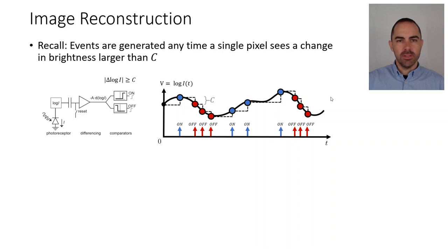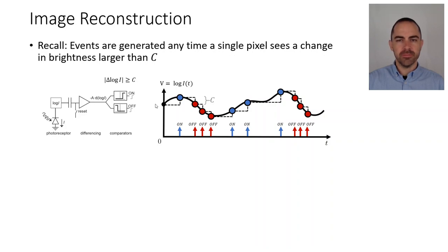So recall that events are generated any time that a single pixel — this is the pixel circuit — detects that light arriving at the photoreceptor has changed by more than a predefined step C. The brightness change is also represented in this image; C is the step that basically says how we sample the range. Light, which is the black line here, is converted into a set of asynchronous events represented as spikes — blue and red for on and off events.